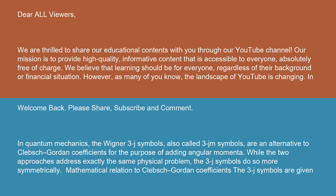Welcome back. Please share, subscribe, and comment. In quantum mechanics, the Wigner 3j symbols, also called 3jm symbols, are an alternative to Clebsch-Gordon coefficients for the purpose of adding angular momenta. While the two approaches address exactly the same physical problem, the 3j symbols do so more symmetrically.